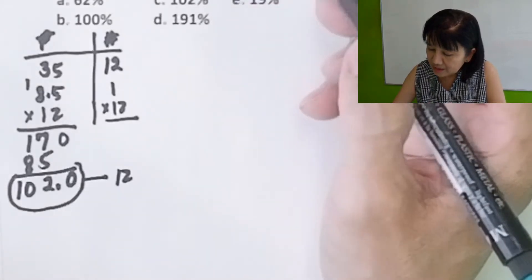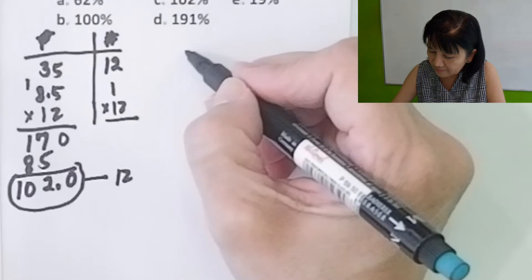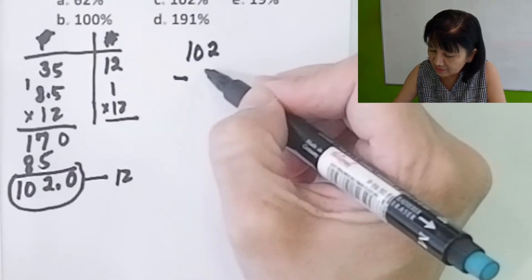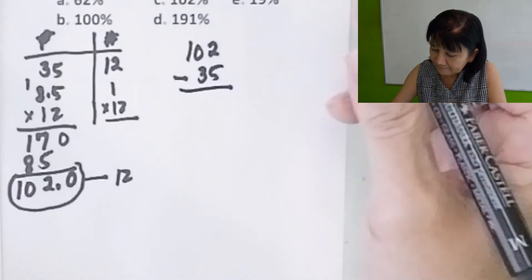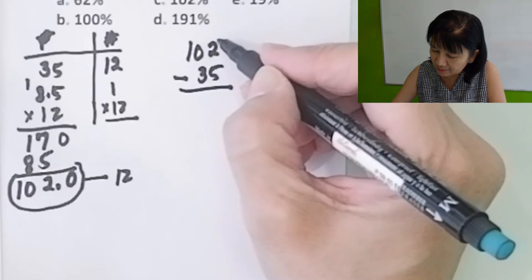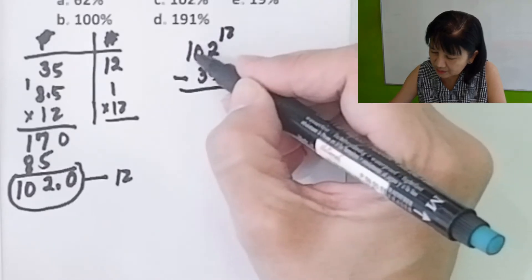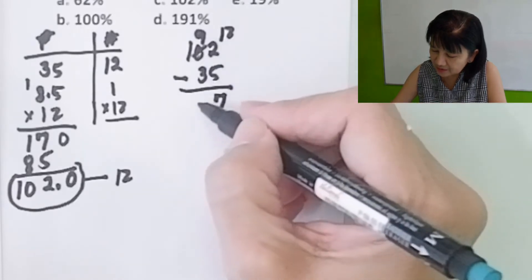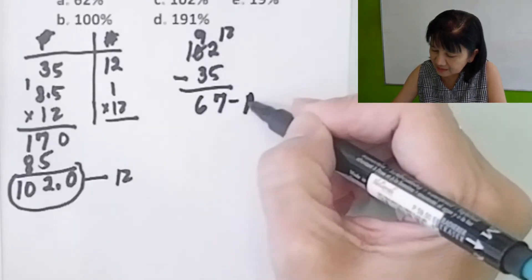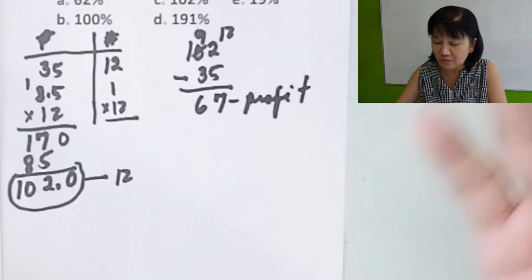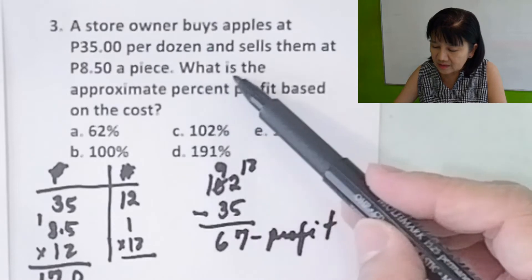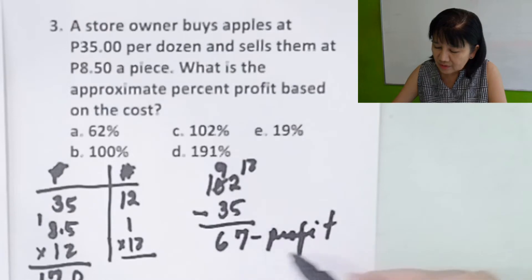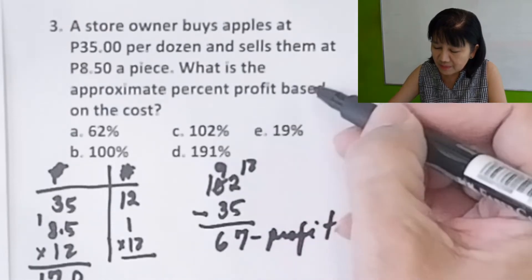The problem is asking for the profit. Therefore, 102 minus 35 equals 67. The profit is 67 pesos.